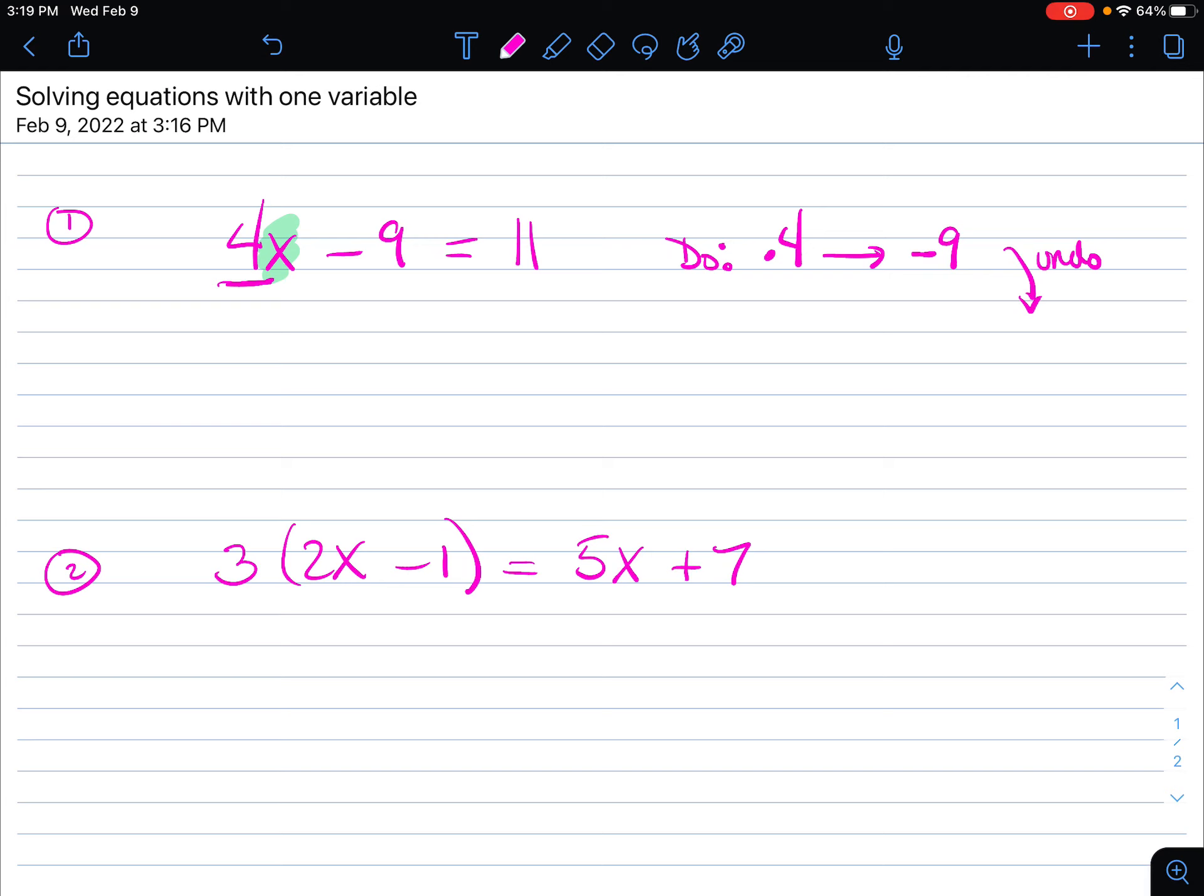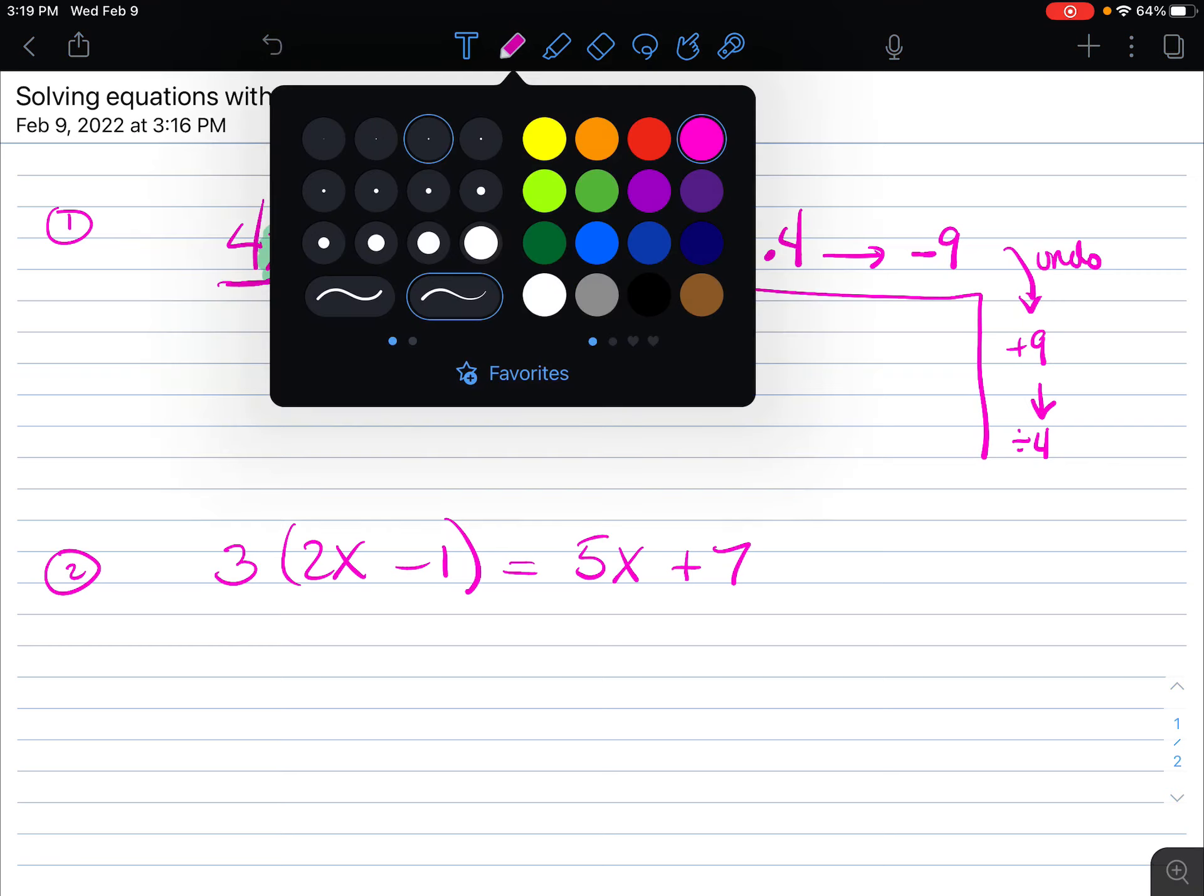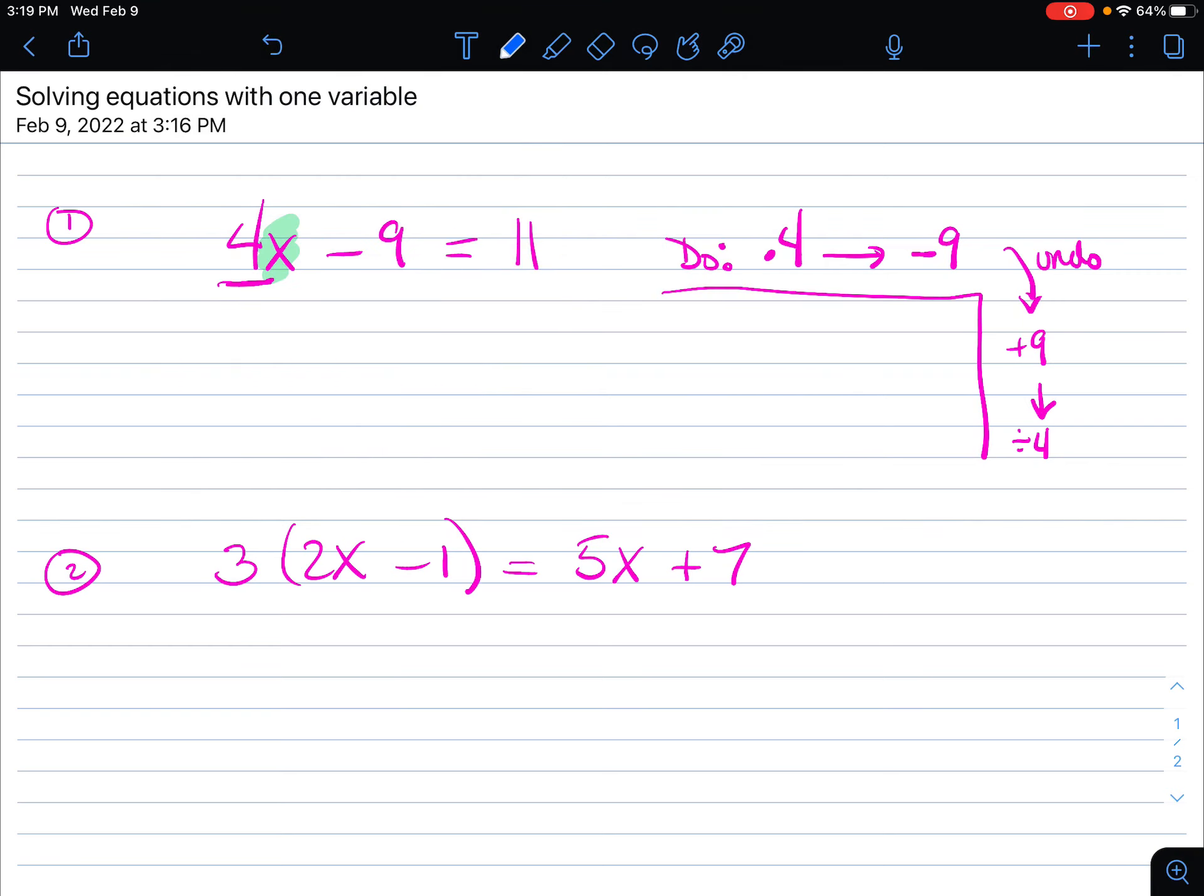So the undo steps, we're going to undo the minus 9 first. We're going to add 9 to both sides and divide by 4. So those are the steps we're going to go ahead and do, and that will allow us to isolate the variable.